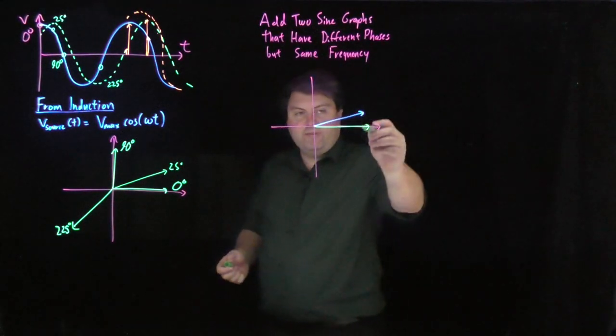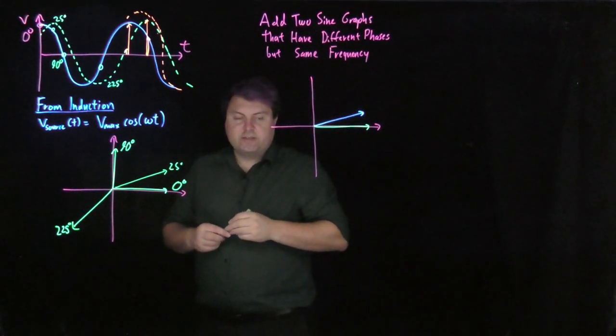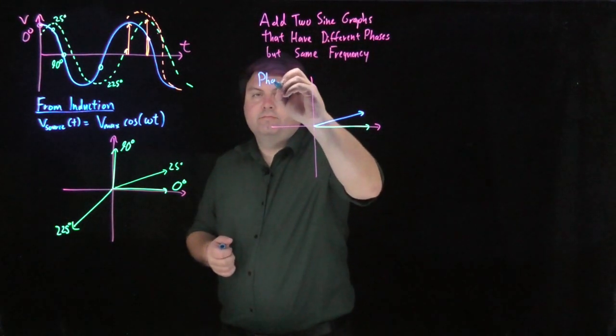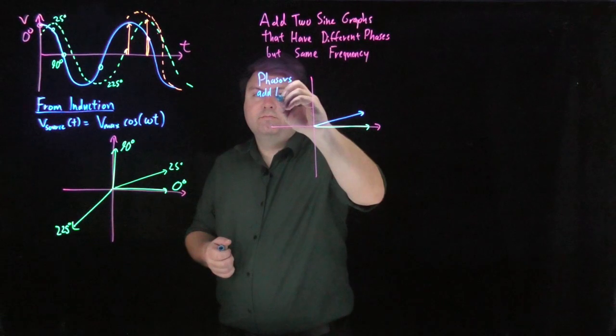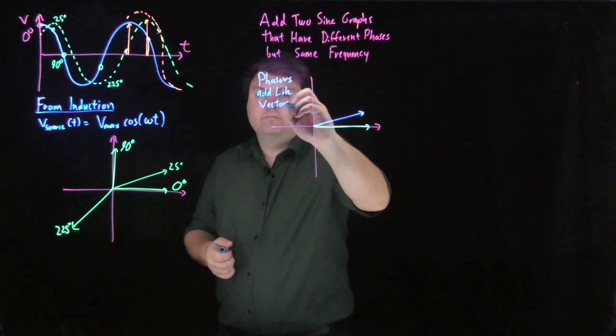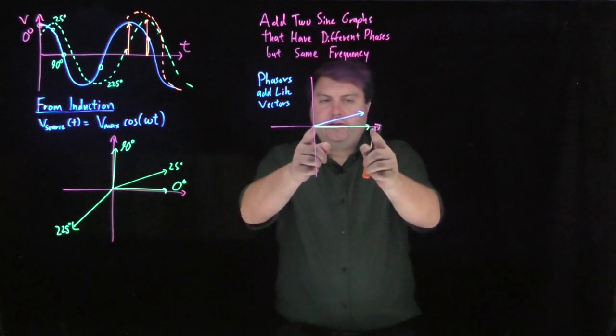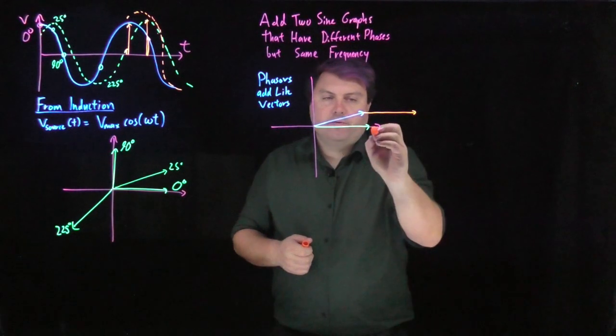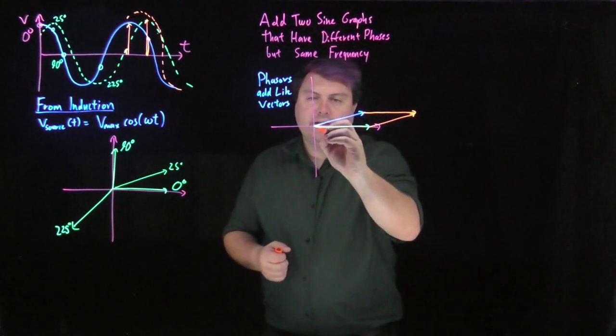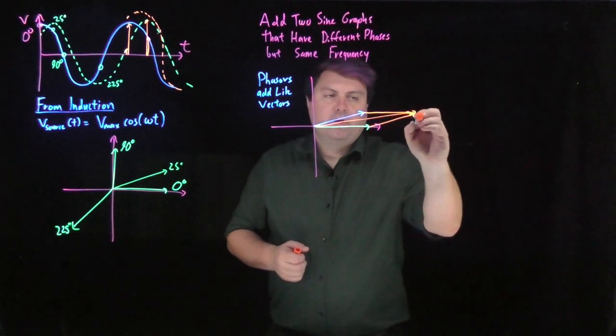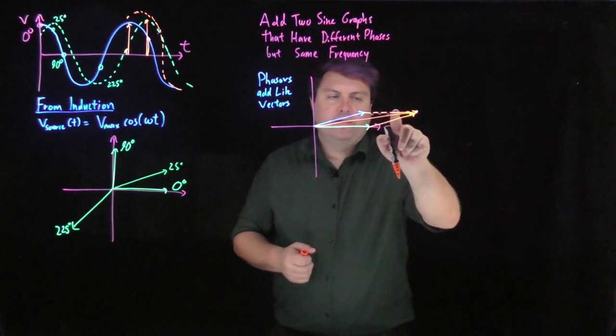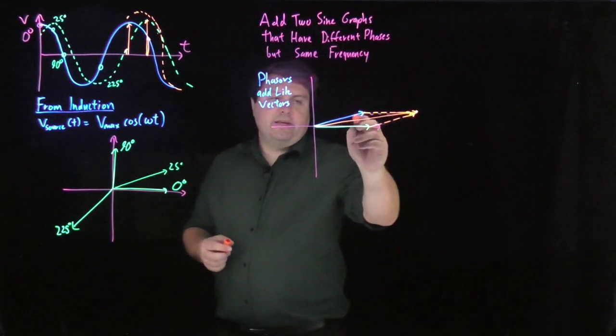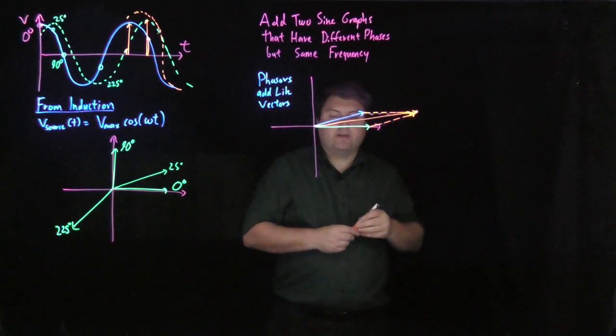And so, then I have these two at these two different phases, and then these two add like vectors. So, I can either take this one and put it here, or this one and put it here, or do the rectangular rhomboid rule. But I would get that this vector here is the resultant of the two vectors. So, I can find that the angle is going to be somewhere in between.